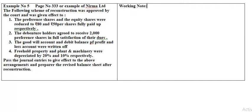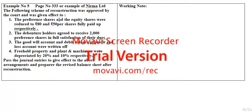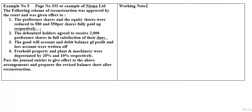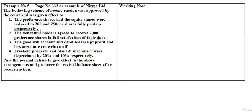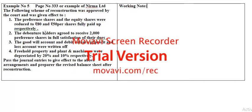The following scheme of reconstruction was approved by the court and given effect to. The preference shares were reduced to rupees 80 per share and the equity shares were reduced to rupees 50 per share, both fully paid up respectively.